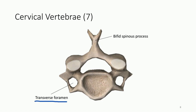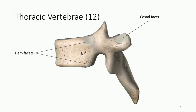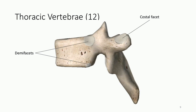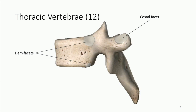For thoracic vertebra, there are two features specific to this type, both associated with the ribs. On the transverse process, there's a small cup called a costal facet — costal referring to the ribs. On the vertebral body, there are two half cups — one at the superior portion and one at the inferior portion — called demi-facets. These structures are important for how the ribs articulate with the thoracic vertebra.